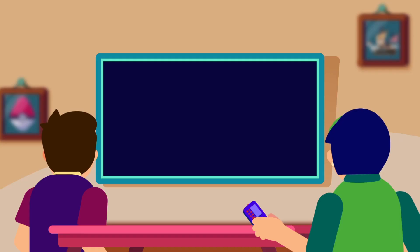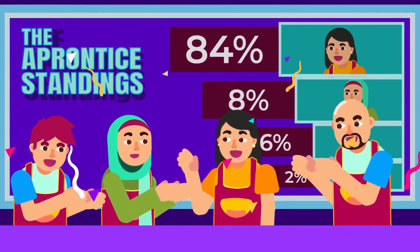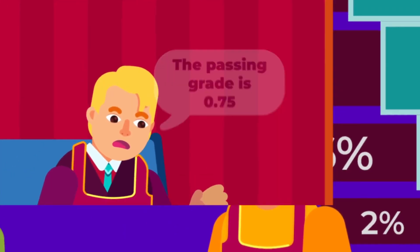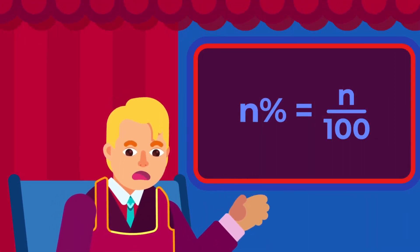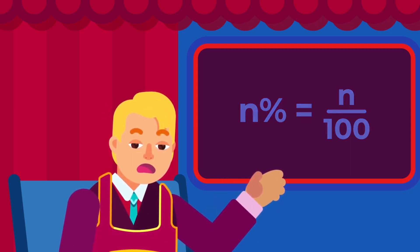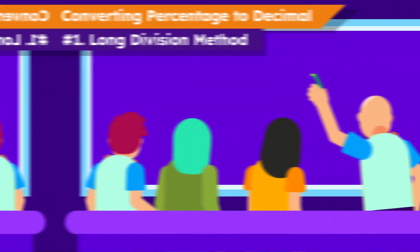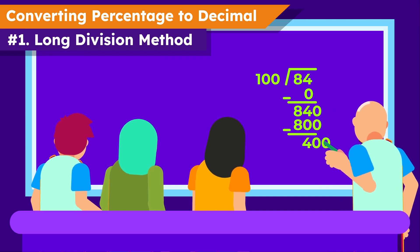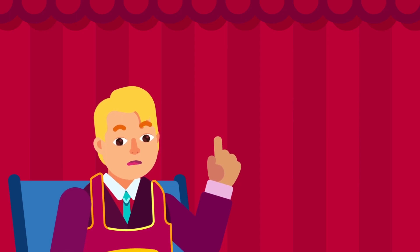Now, let's learn about the reverse process: converting percentage to decimal. You obtained an 84% mark for the business task. How do you know that you are qualified enough to continue the process if the passing grade is 0.75? You can express this percentage into a fraction first. In mathematics, percentage is a number or ratio expressed as a fraction of 100 — it means out of 100. So 84% equals 84 out of 100. To convert it into decimal, we can directly use a long division method of dividing 84 by 100 until the zero remainder is obtained, giving us 0.84, but this method takes longer.